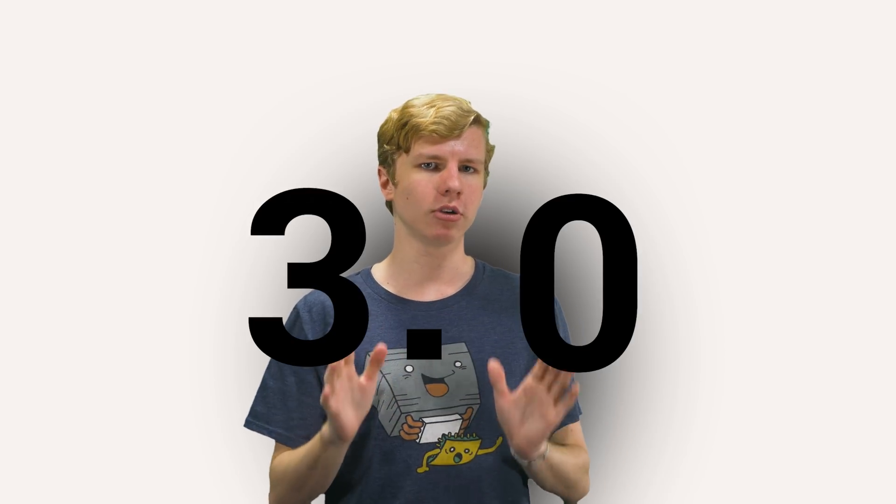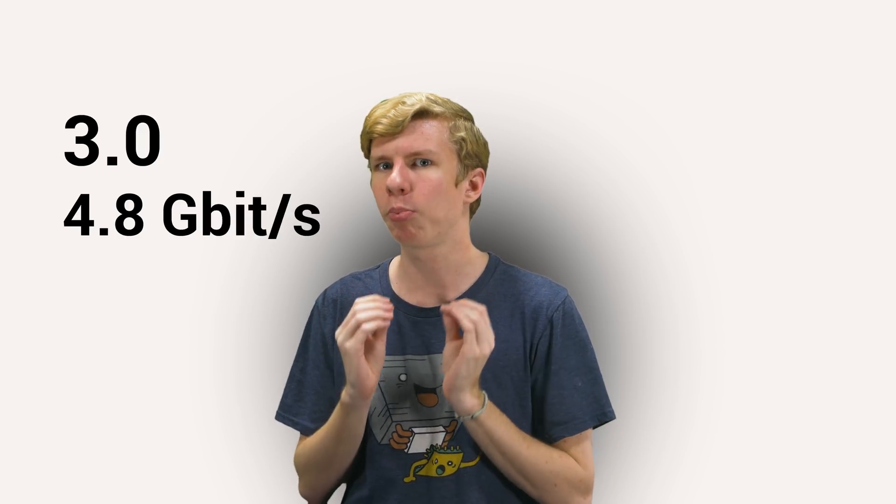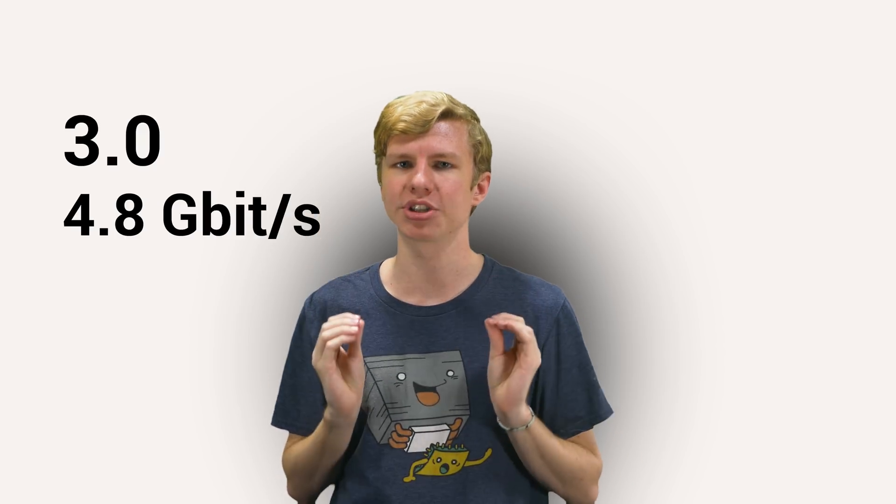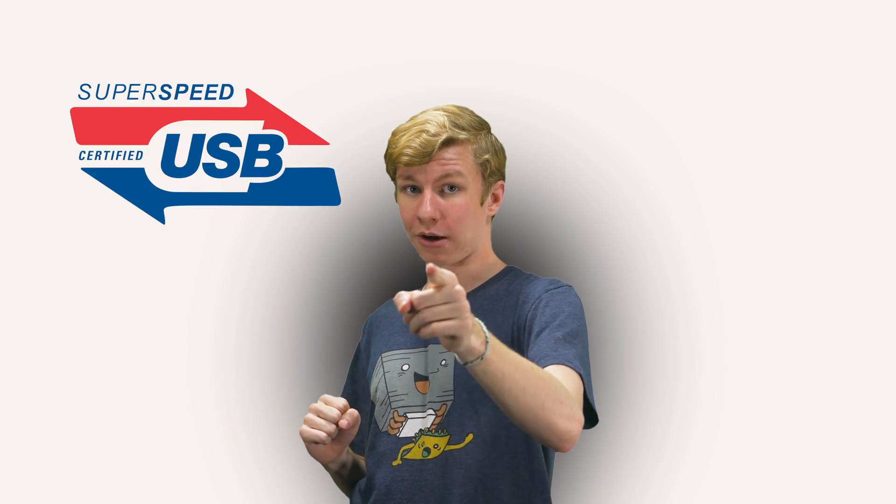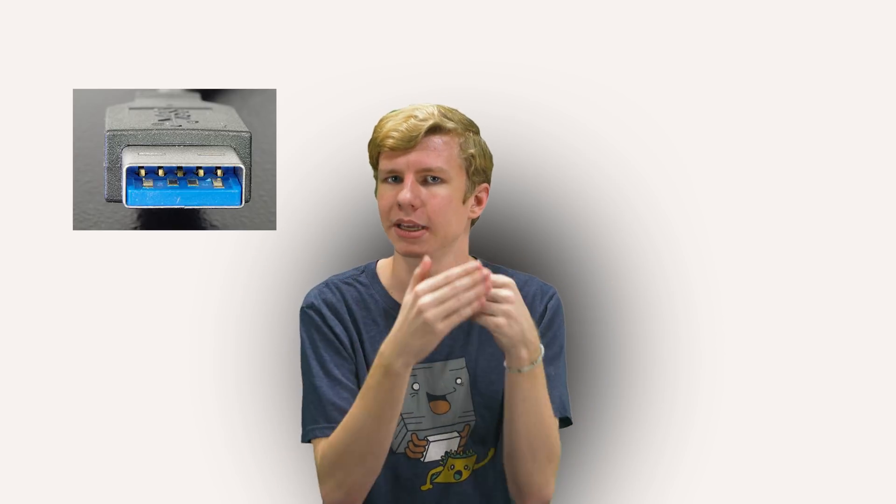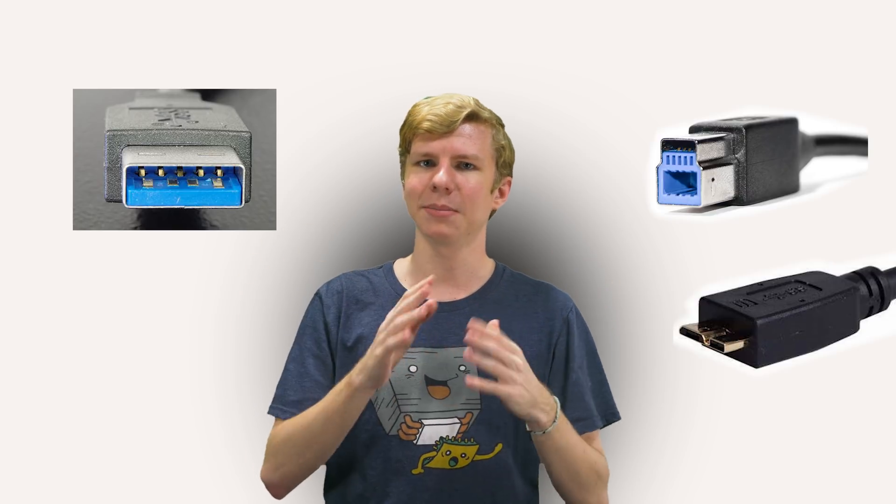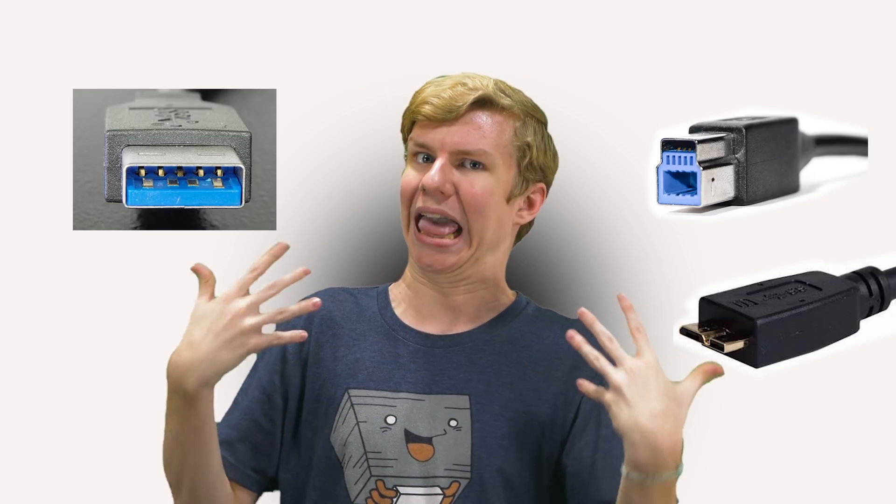USB 3.0 came in 2008, upping the speeds even further from 480 megabits per second to 4.8 gigabits per second. A 10x upgrade! This was called USB super speed, and it was still forwards and backwards compatible with all existing devices, just like before, but it also had an extra set of pins to help facilitate the higher speeds when connected to compatible devices. The USB A connector was super easy. The pins could just sit at the back of the port, so if you plug it into a 2.0 port, it works the same, it just doesn't make contact. But for the Type B and Mini and Micro Bs, it was a little less elegant.